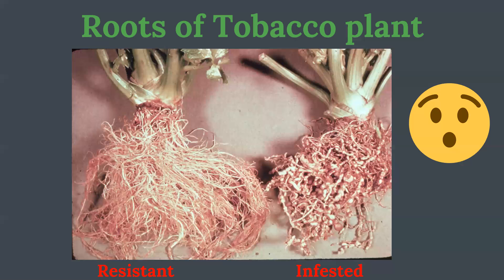On the screen you can see the roots of the tobacco plant. The first one is the resistant plant root, which has been made genetically resistant. The other tobacco root is infested with the pest.